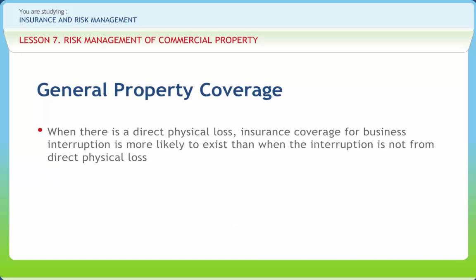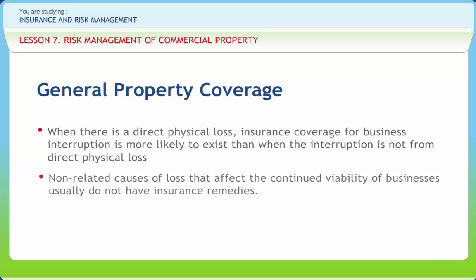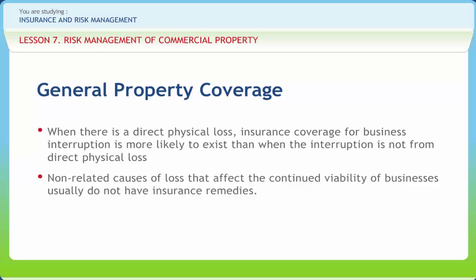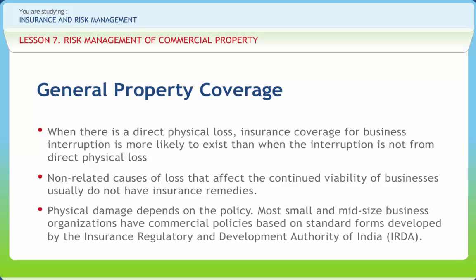When there is a direct physical loss, insurance coverage for business interruption is more likely to exist than when the interruption is not from direct physical loss. Non-related causes of loss that affect the continued viability of businesses usually do not have insurance remedies. A key problem in these cases would be lack of insurance coverage. Physical damage depends on the policy. Most small and mid-sized business organizations have commercial policies based on standard forms developed by the Insurance Regulatory and Development Authority of India. Larger companies often have custom-written manuscript policies that may not be so restrictive. Whatever the wording is, it is likely to be debated in court.